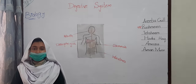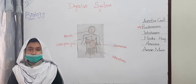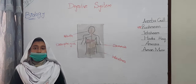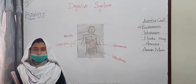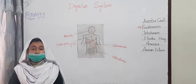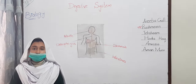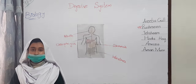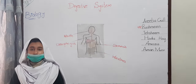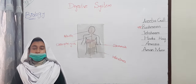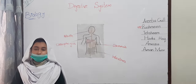Our human body is made up of several organ systems, and one of them is the digestive system. Our body needs energy and food to grow, move, and to stay alive. Our body cannot use the food in the form it is eaten by us, so our body changes it into a simpler form. The process of changing food into a simpler form is called digestion, and the parts of the body that take part in digestion form the digestive system.